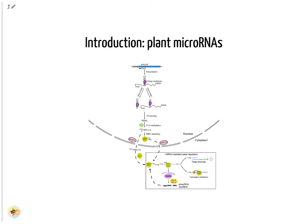MicroRNAs, mainly 20-22 nucleotide small RNAs, are characterized for regulating gene expression at the post-transcriptional level. MicroRNAs are distinguished from other small RNAs by being generated from precursors harboring an imperfect stem-loop structure. Unlike in animals, the pre-processing of plant microRNA occurs in the nucleus. The pre-microRNAs are then exported to the cytoplasm after methylation and incorporated into the Argonaute-1 protein to form an RNA-induced silencing complex. The microRNA itself does not have the ability to cleave mRNAs or interfere with translation, but it plays a role in scanning the appropriate target.